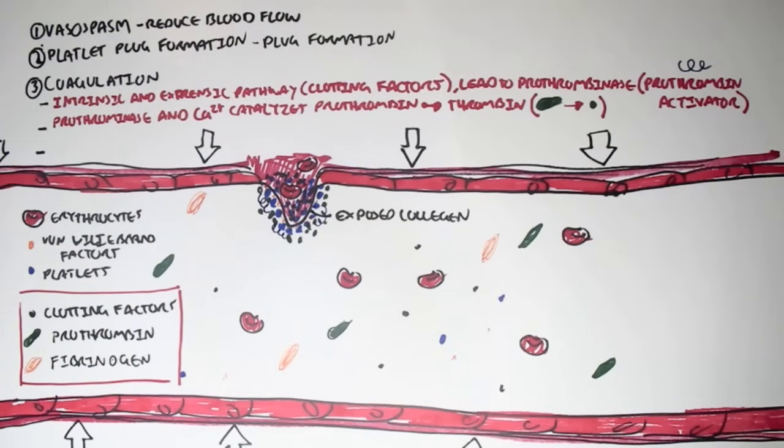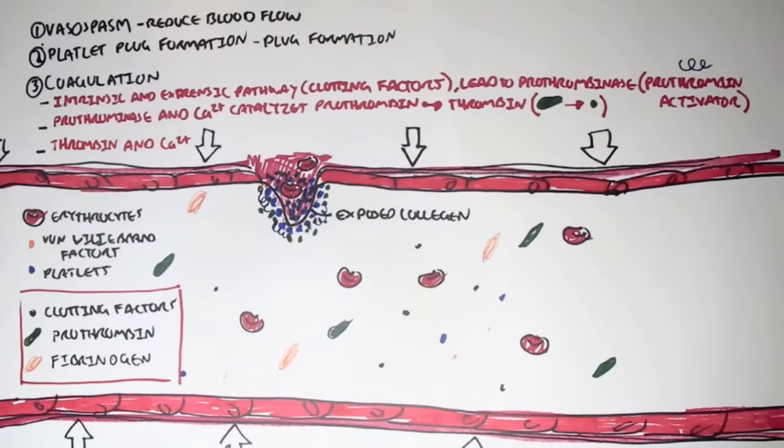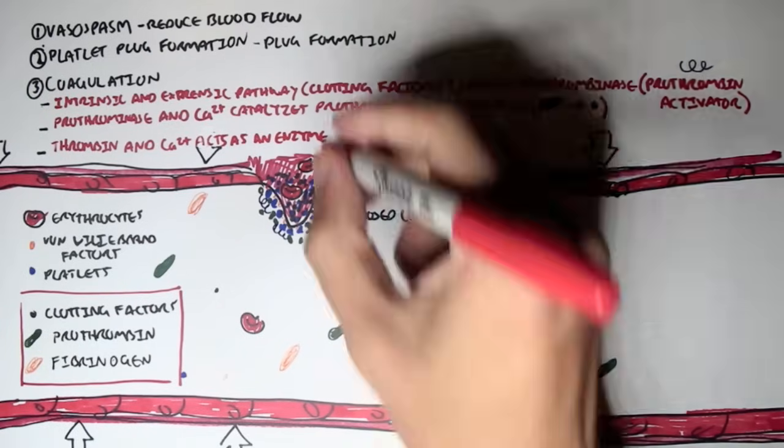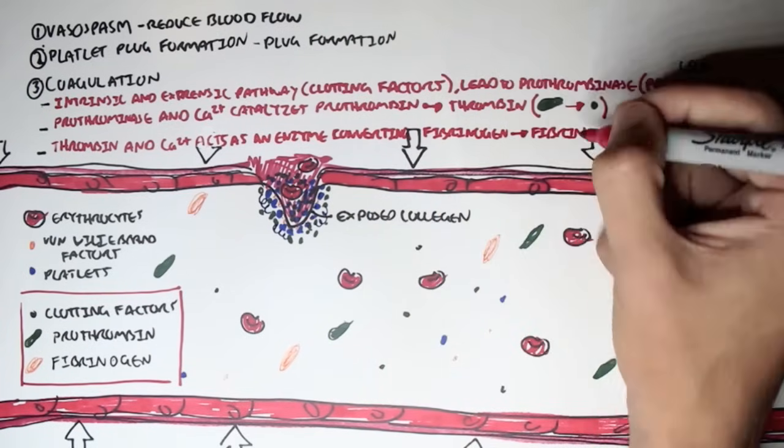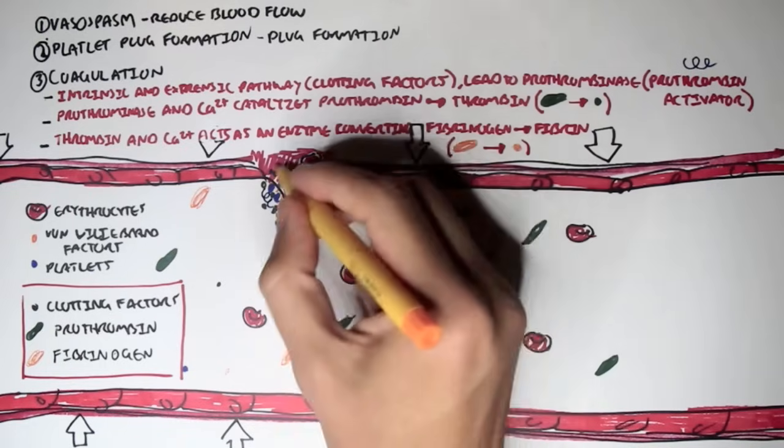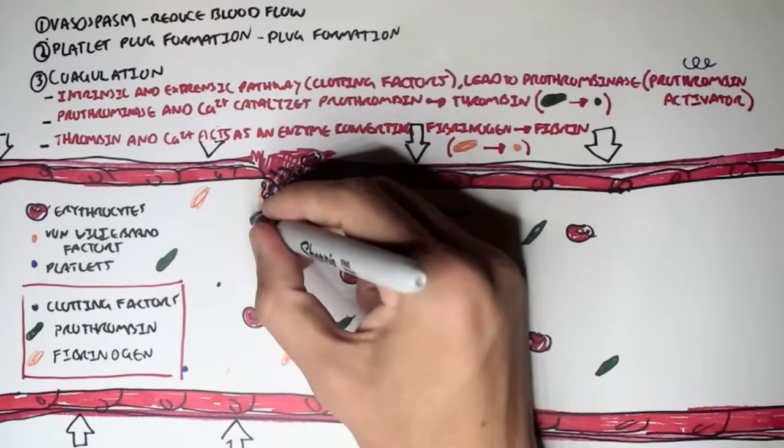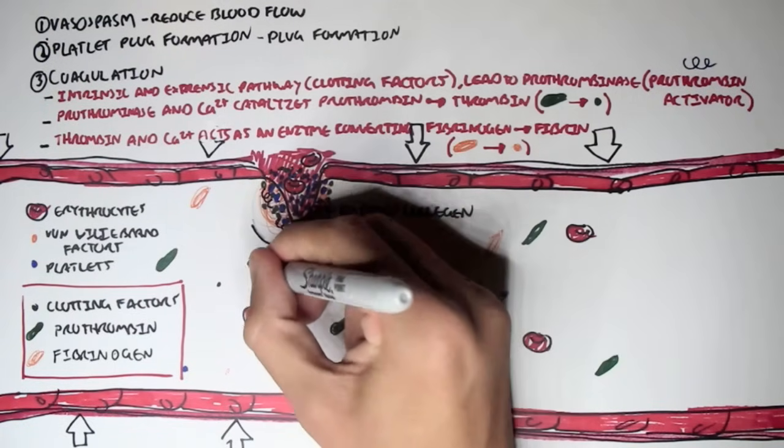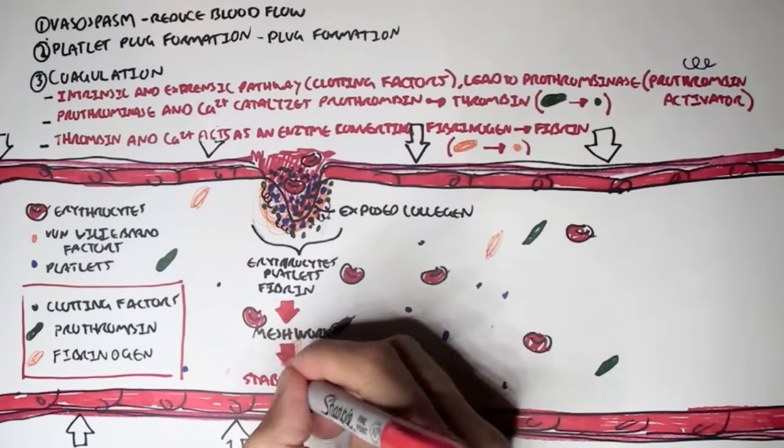And then, the third part of coagulation is when thrombin, which was just catalyzed from prothrombin, with, again, some calcium ions, acts as an enzyme to convert fibrinogen into fibrin. So, now, this fibrinogen, this big orange thing, will get converted into fibrin. So, now, this fibrin is all around this injured site here. And this fibrin, these fibrin fibers will stick to everything else around there, the erythrocytes and the thrombocytes, the platelets, to form, essentially, a sort of meshwork. And this meshwork will, essentially, later, form a stable clot.